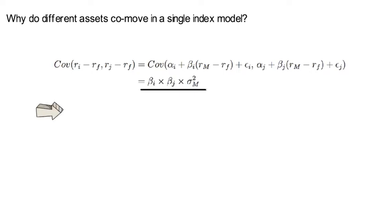This says that two assets co-move in a single index model because both have a beta exposure to the common risk factor rm.